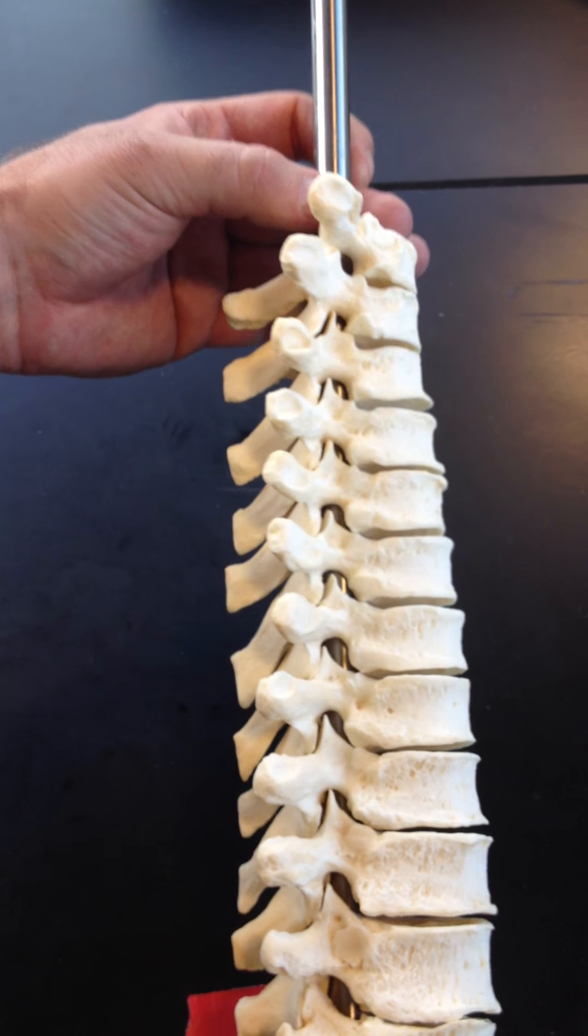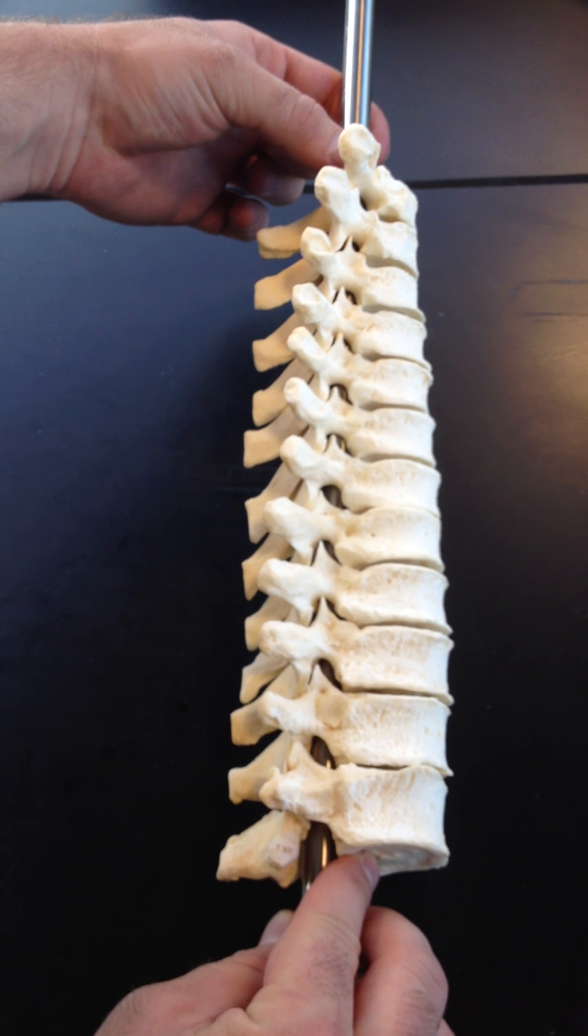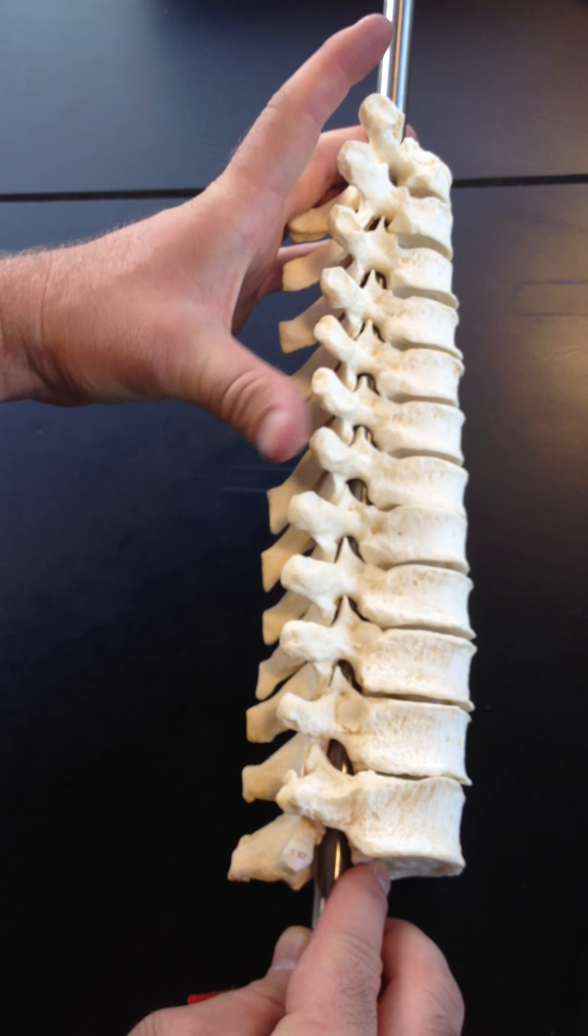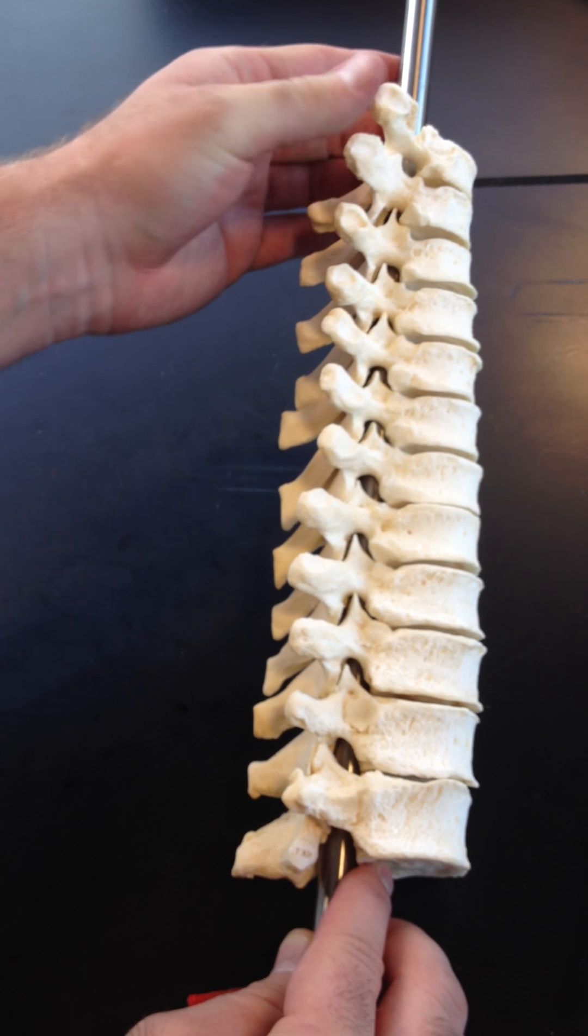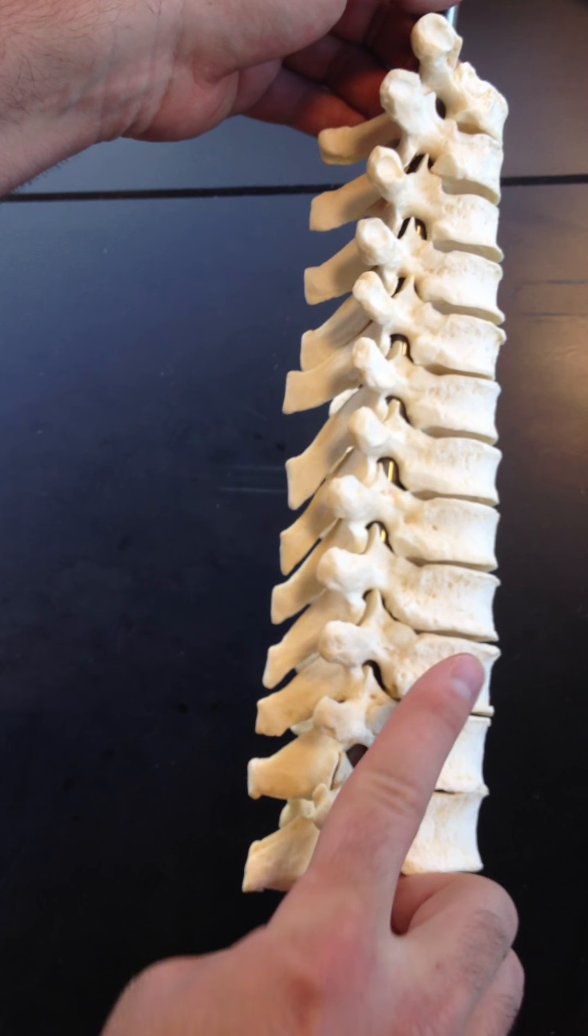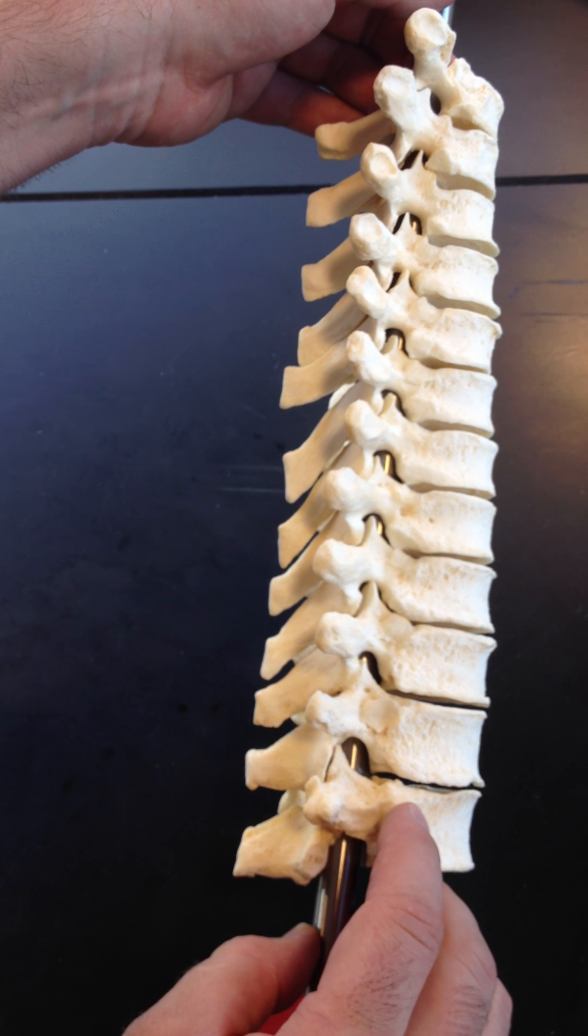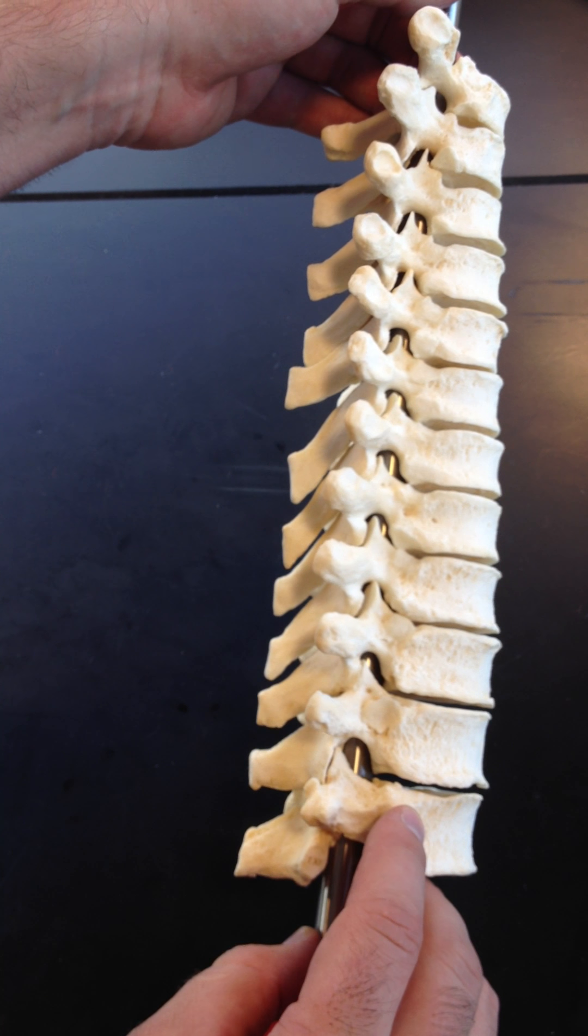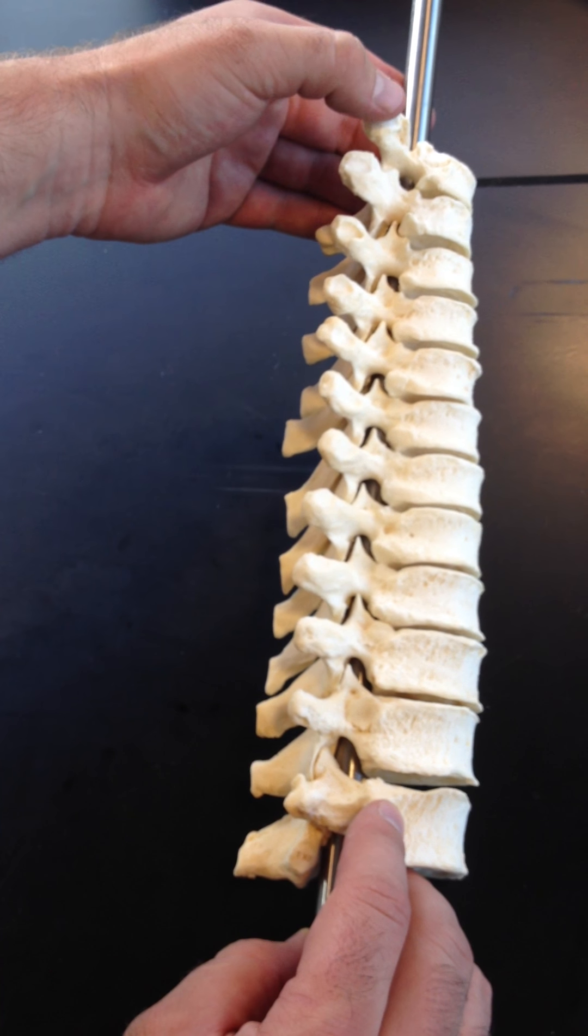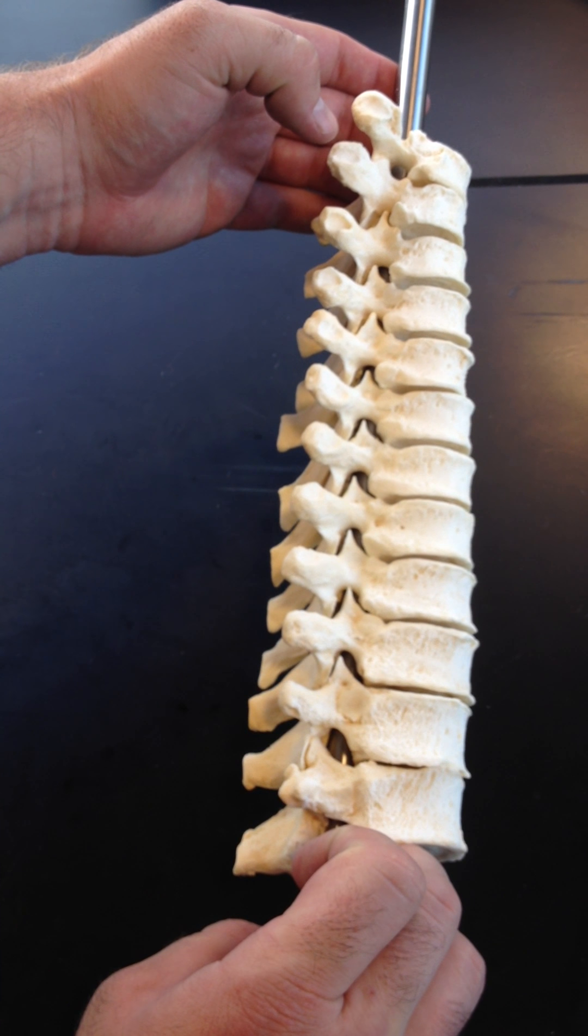Okay, and then just to mention, superior and inferior demifacets are present on T1 through T9 and not T10 through T12. Full facets are present on T1, T10, T11, and T12, not on the rest. And those transverse costal facets for the tubercle of a rib are present on T1 through T10, not T11 and T12.